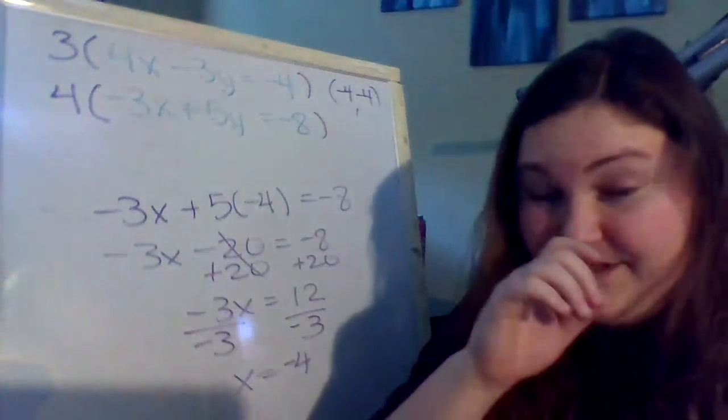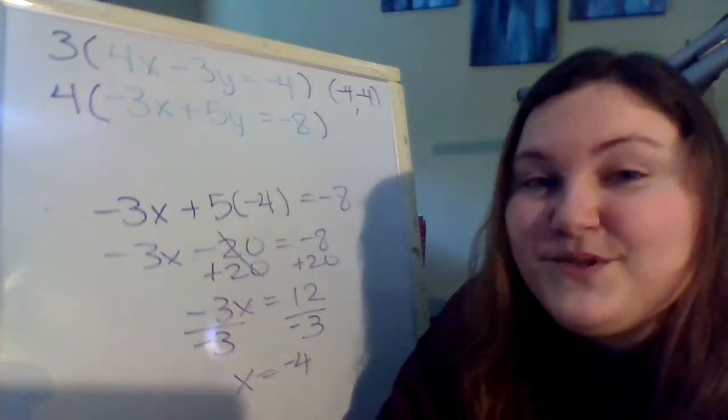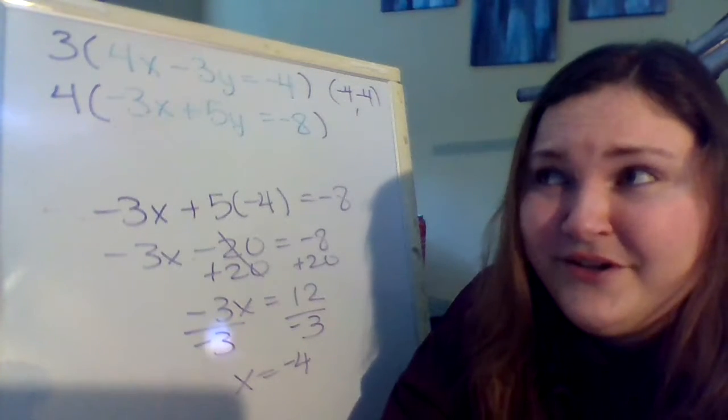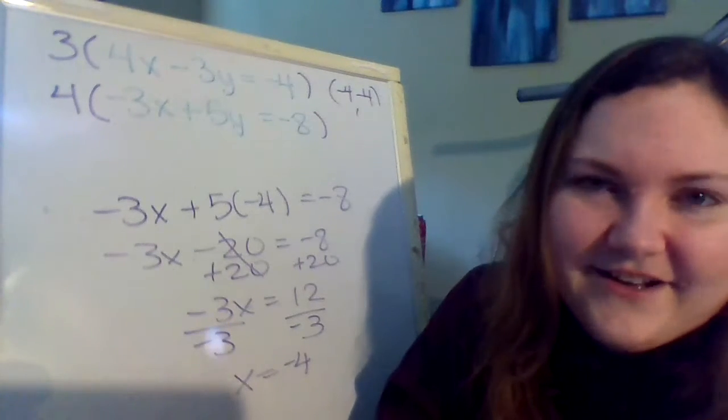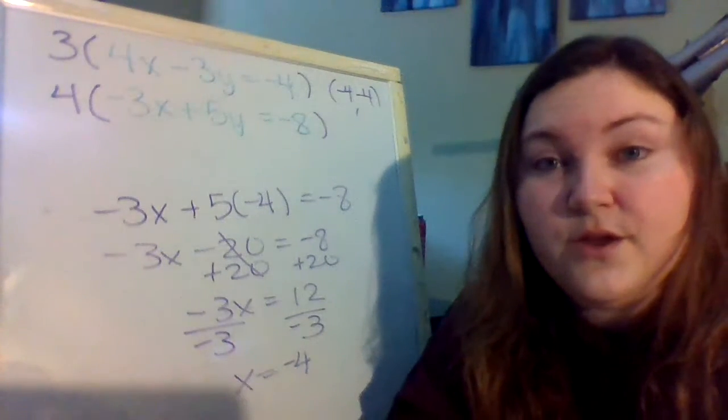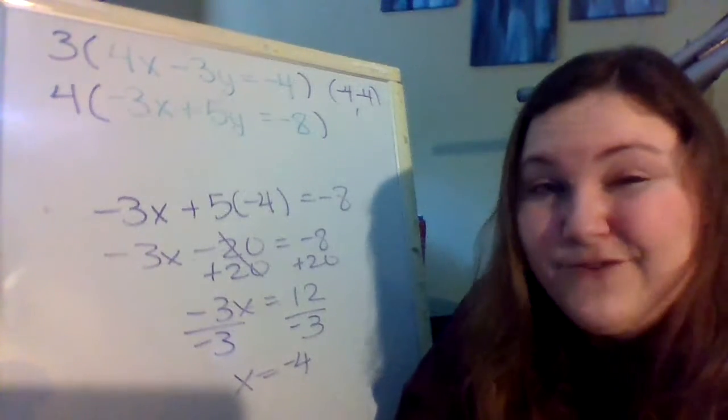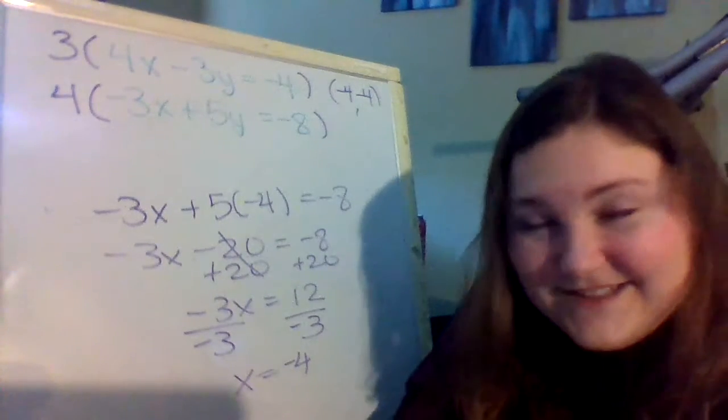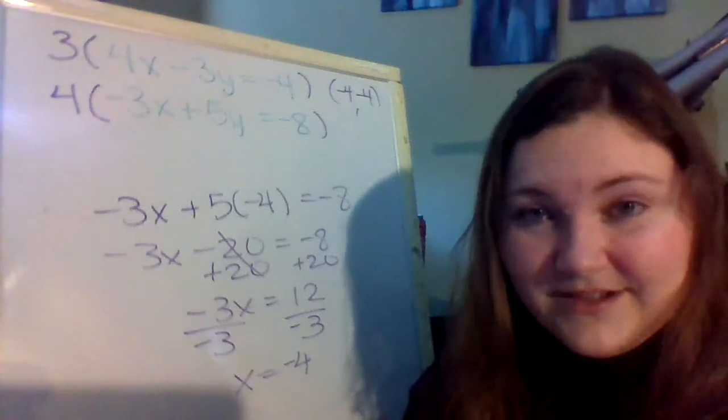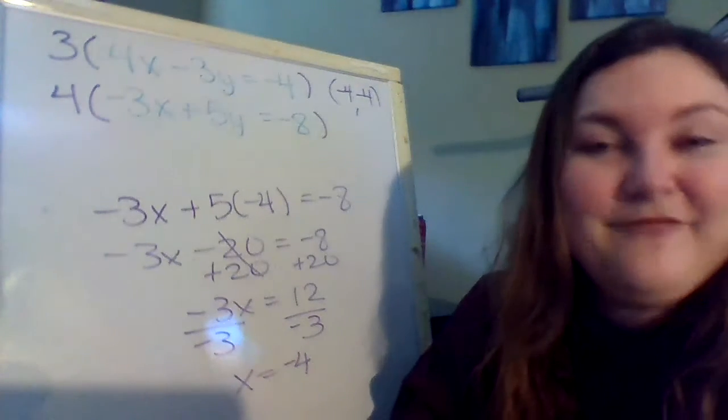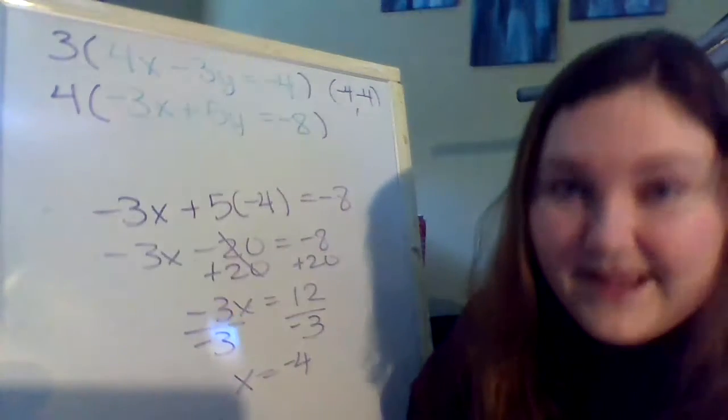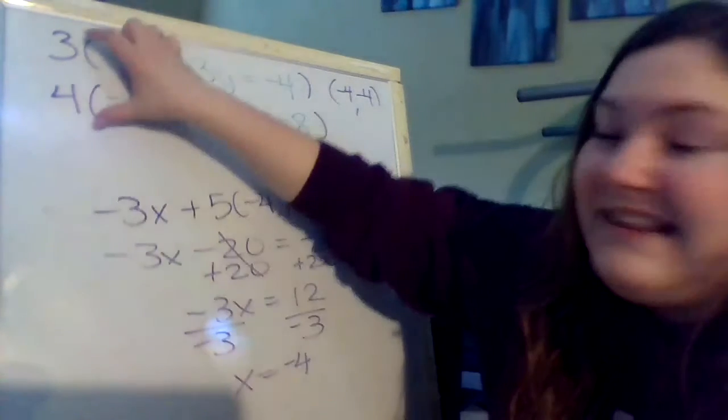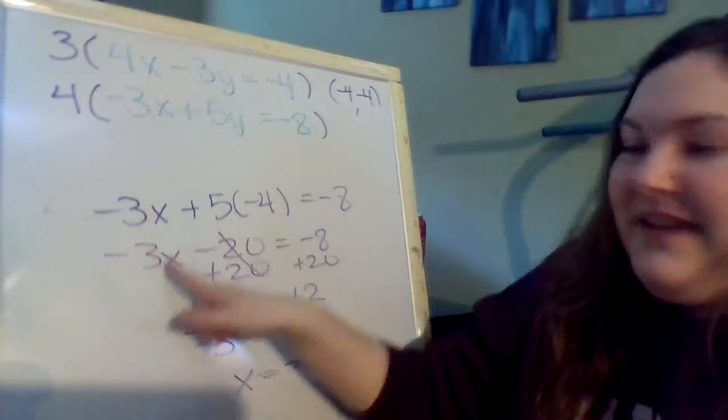So this is our last resort. I say last resort because sometimes if you do this, if you multiply both equations when it's not necessary, it gives you large numbers unnecessarily. So don't forget to always check for the ways we saw in the first set of notes. Check to see first, can you just go ahead and add the equations to make something eliminate? Maybe you don't need to multiply at all. If that's not the case, then check to see, can you multiply one equation and get something to eliminate? If both of those don't work, then this right here is our last option.